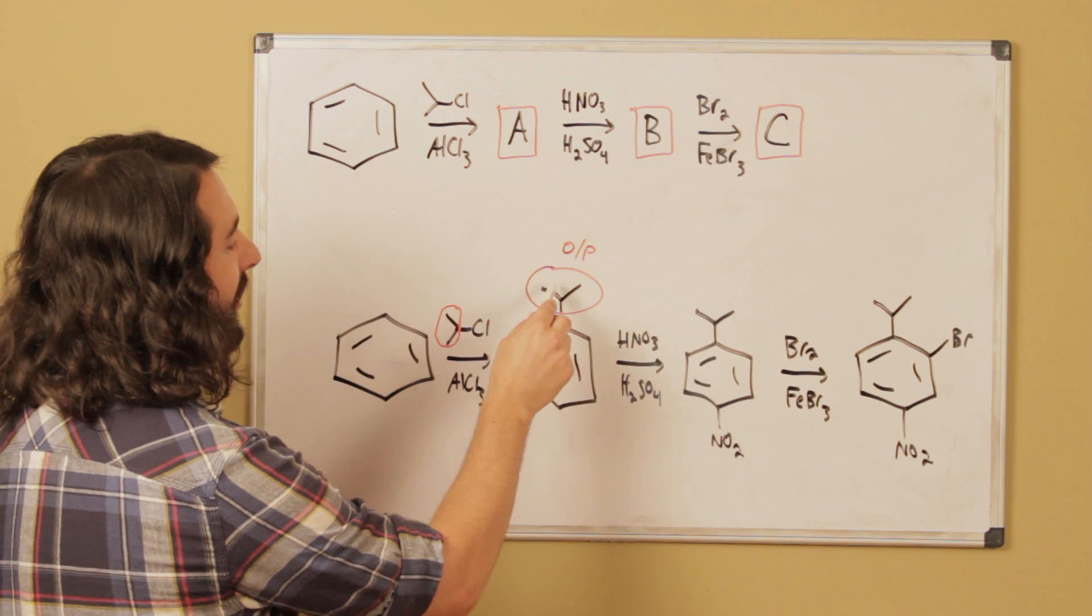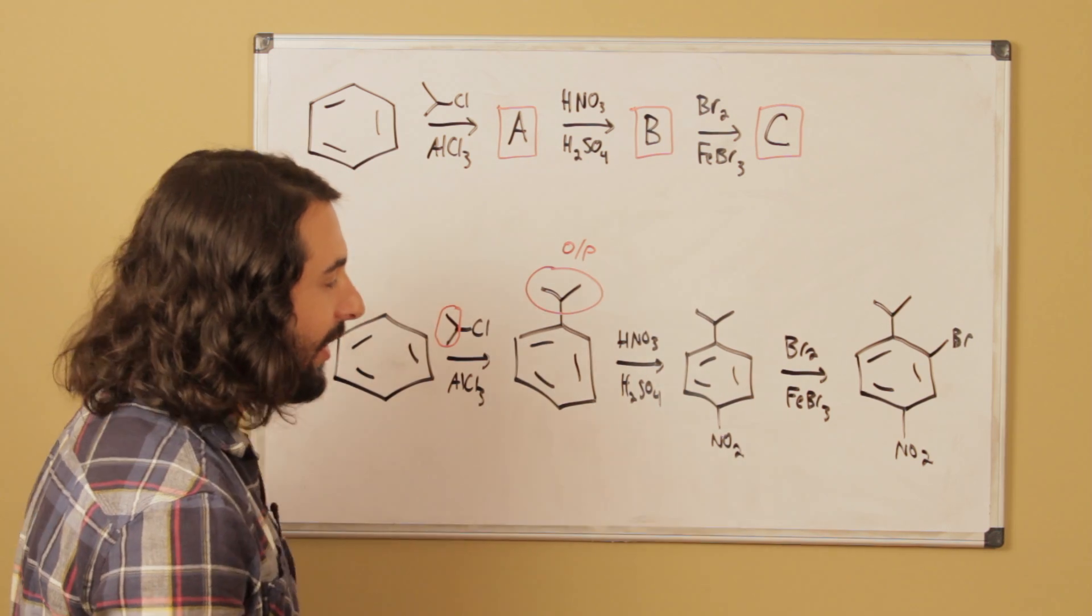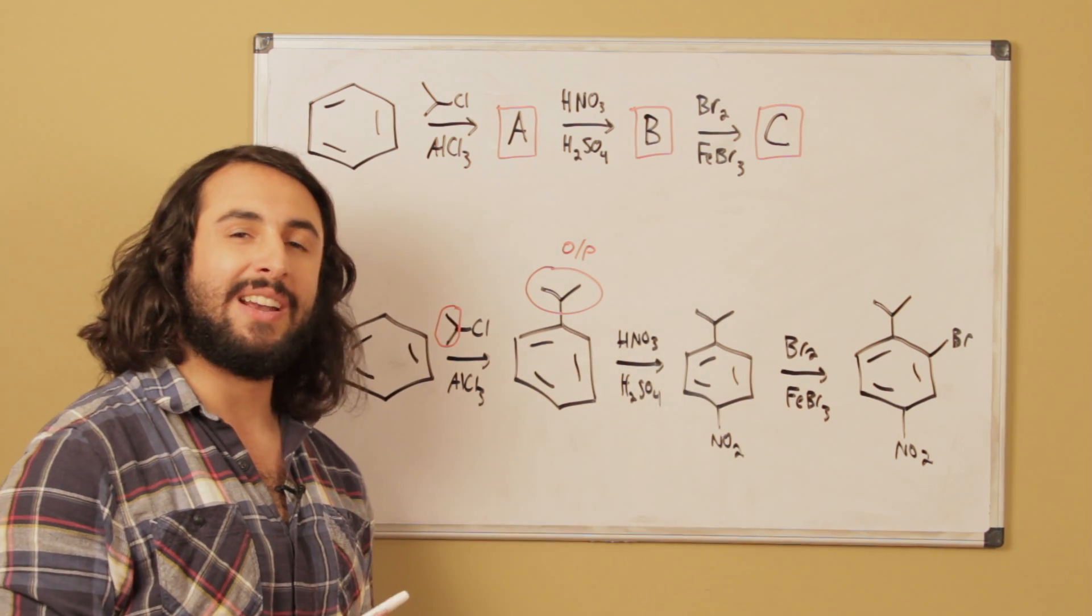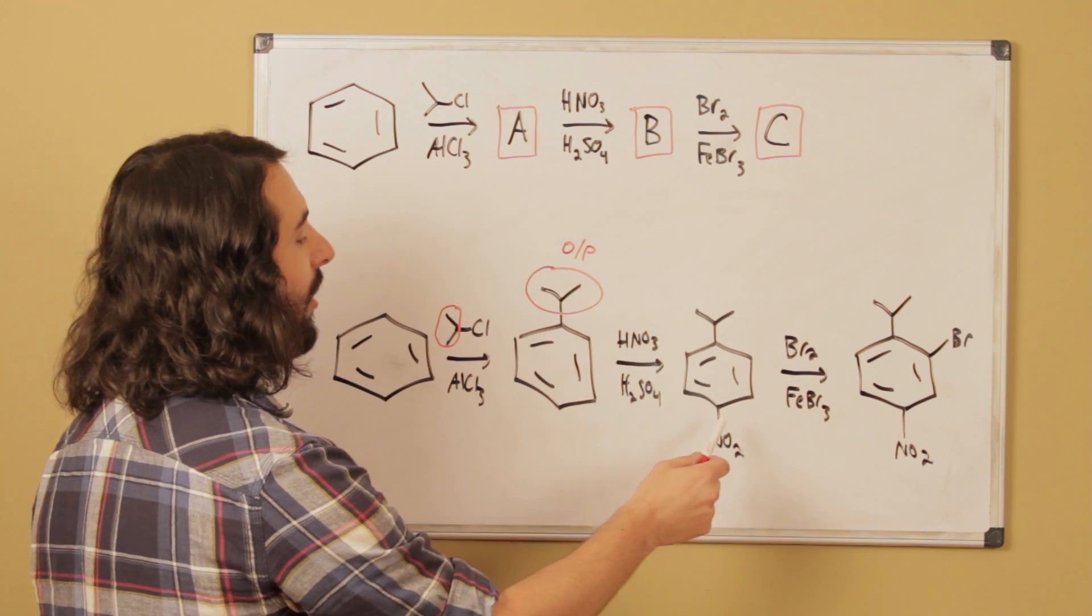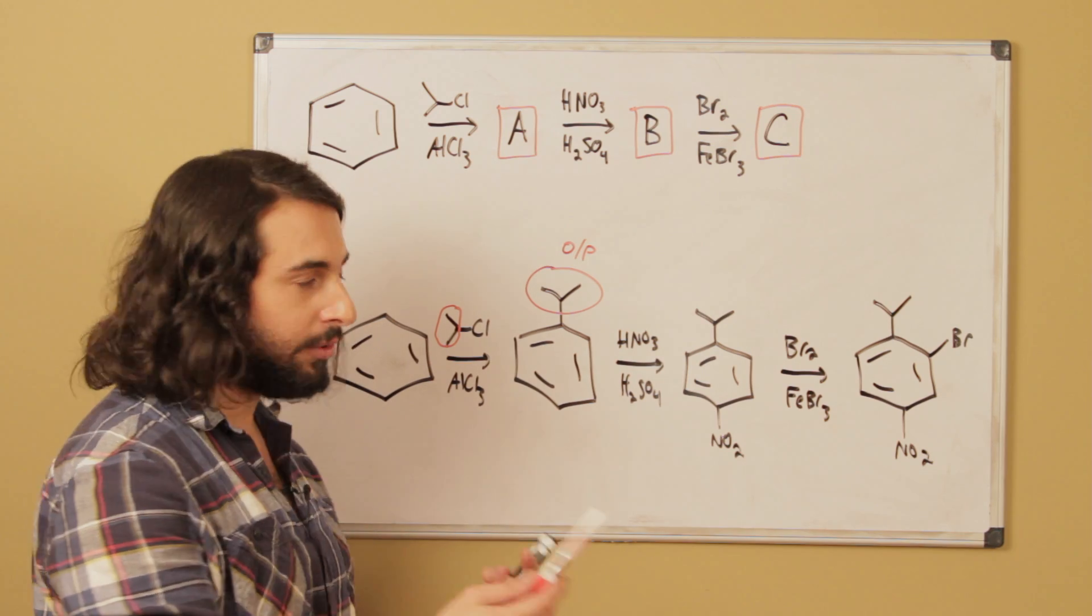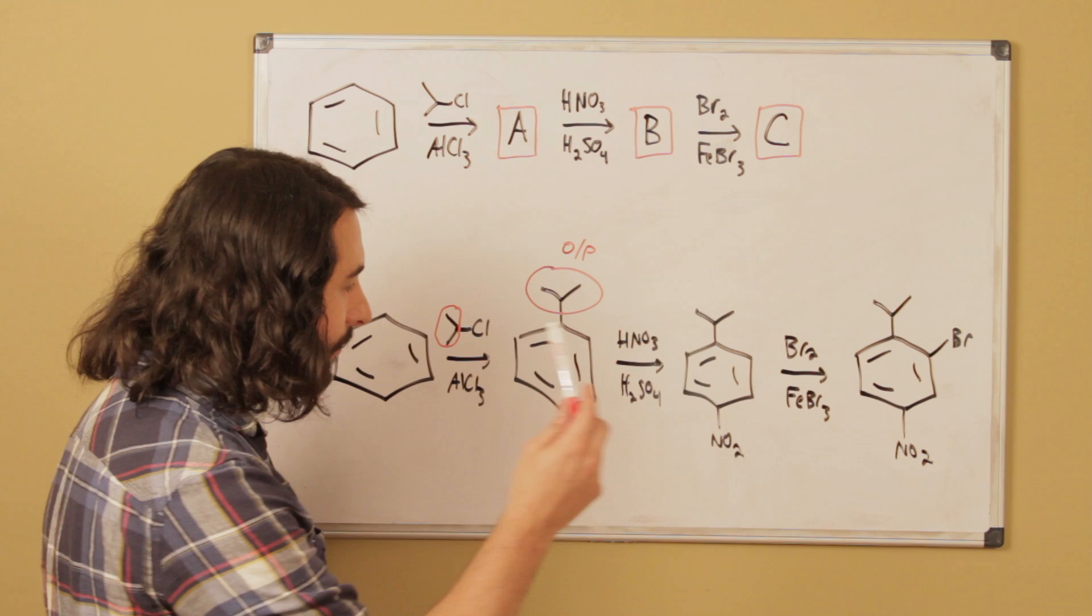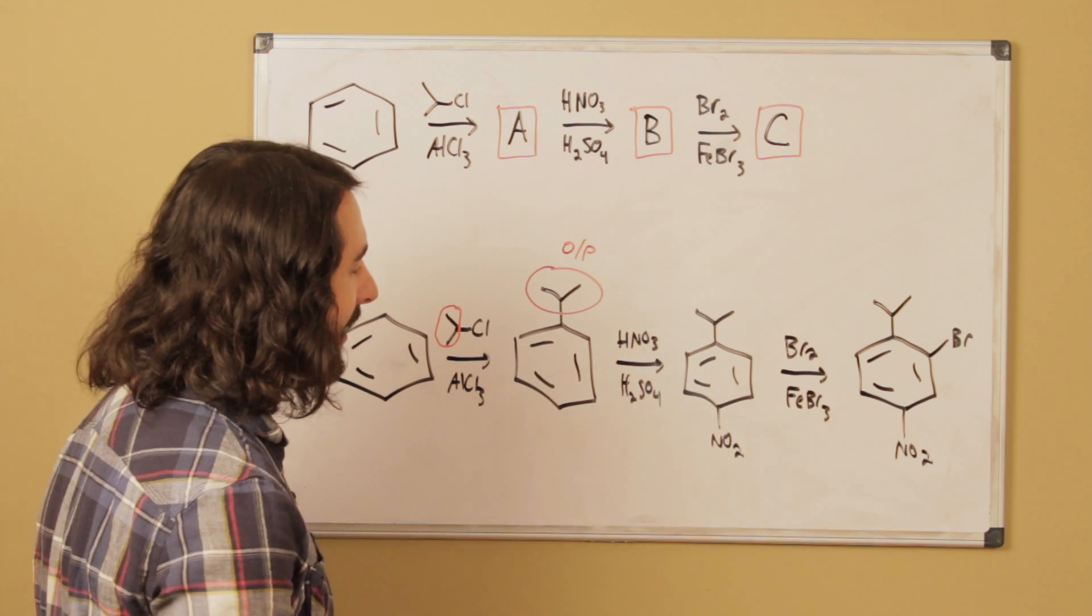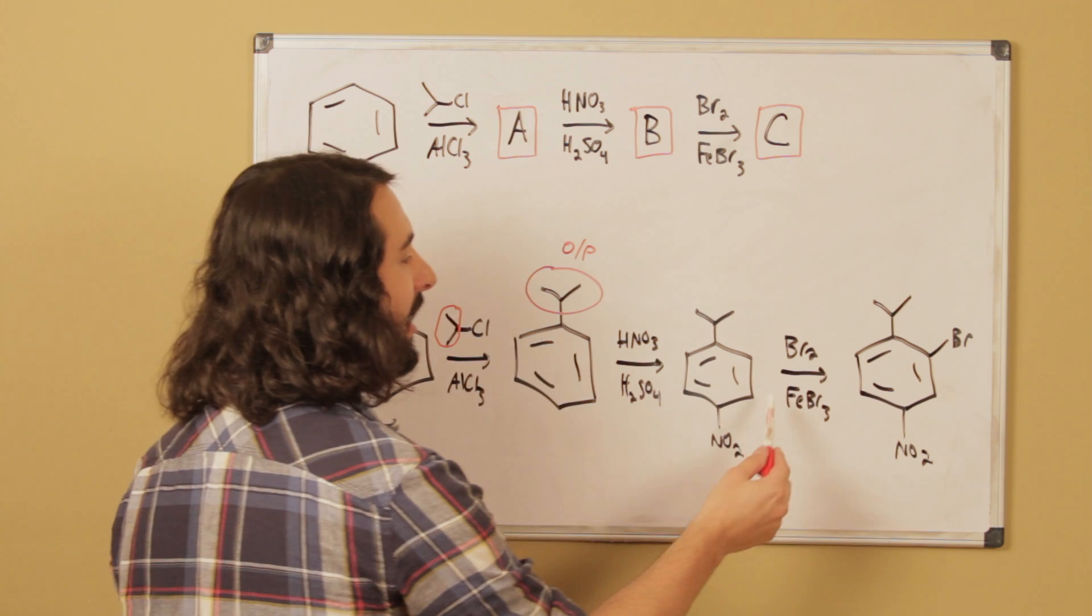So this is going to be an ortho-para director, and so I've arbitrarily chosen to put the nitro group at the para position, although not entirely arbitrarily because there is some issue in terms of sterics. So I think that the para position is slightly more energetically favorable, although there are two ortho positions, but at any rate both of these are correct. So I've chosen to substitute para right there.